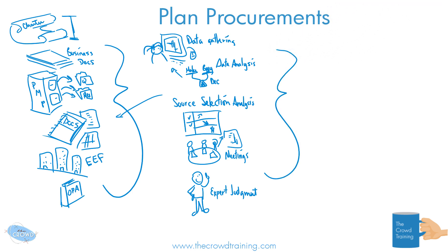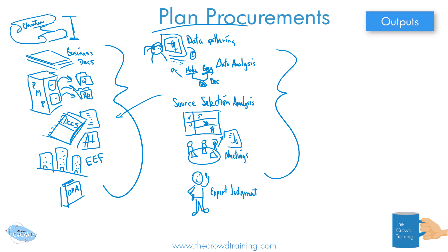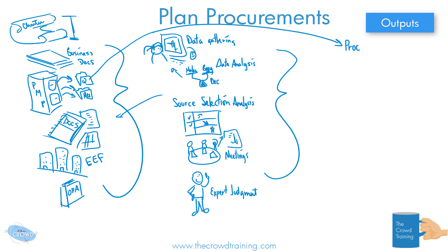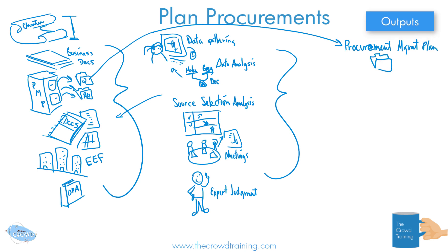Now let's move on to a long list of outputs. This is a planning activity, and part of our plans — part of the project management plan — is a procurement management plan. This means how are we going to manage all of our procurement needs, wants, expectations, and naming conventions. All those different plans have to be figured out, and all of that is part of our project management plan.